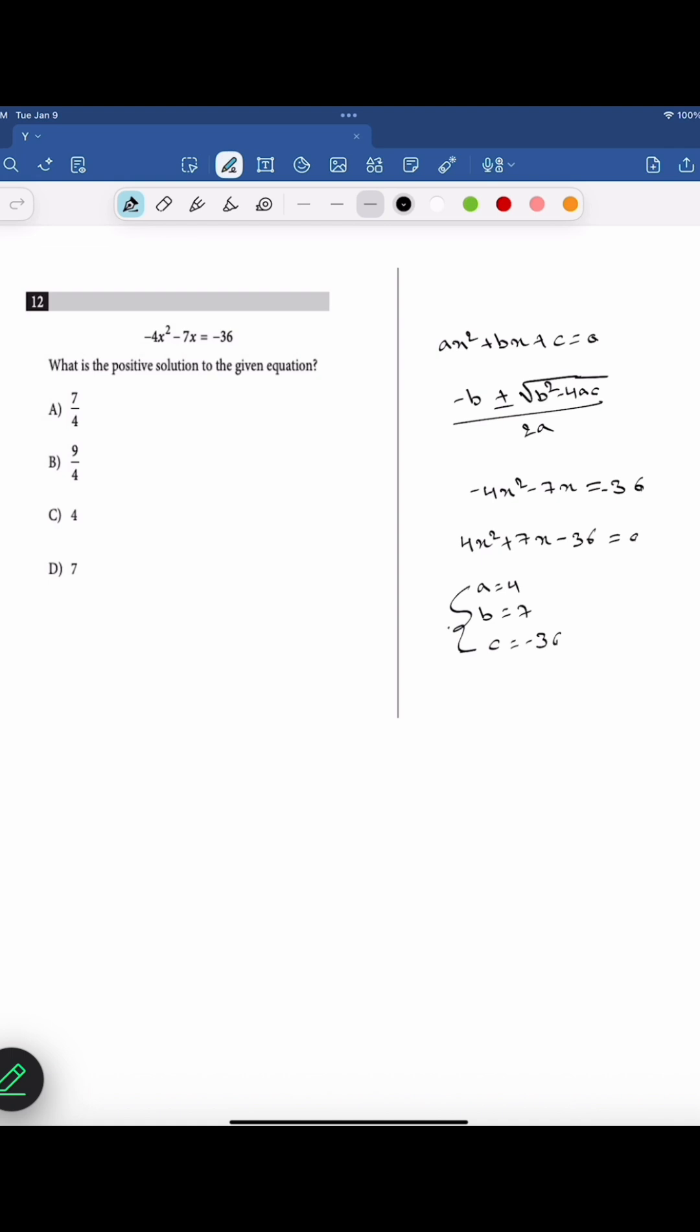If we substitute these three values in this formula, we will get the roots of the quadratic equation. So, minus 7 plus or minus square root of b square is 49 minus 4 times minus 36 divided by 2a, which is 2 times 4.